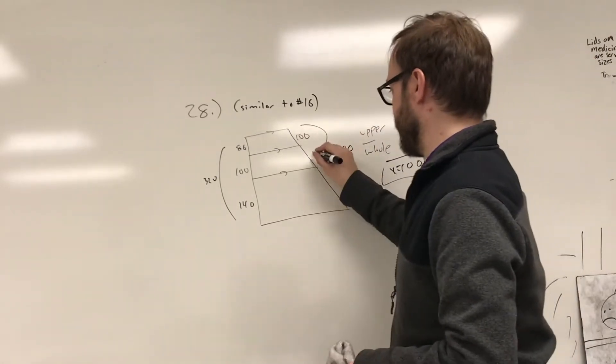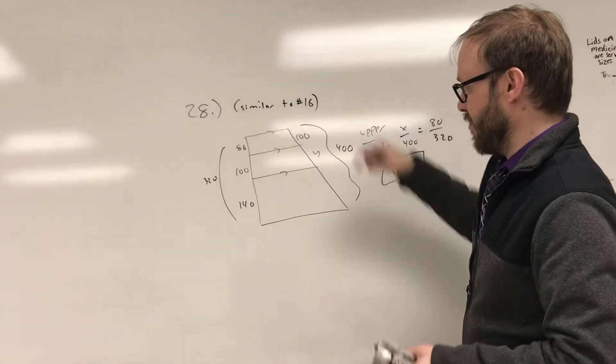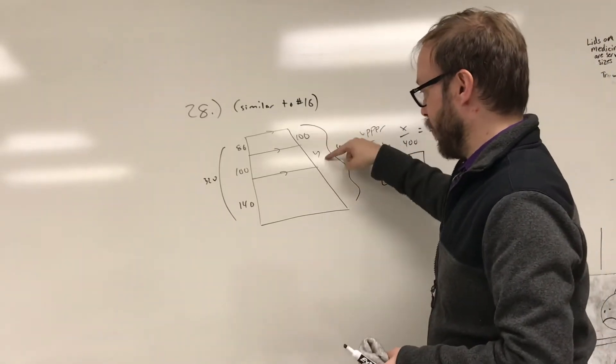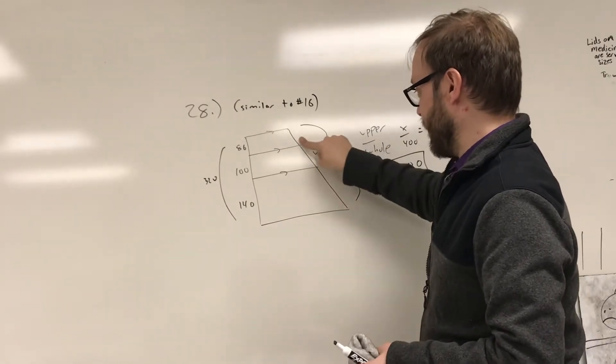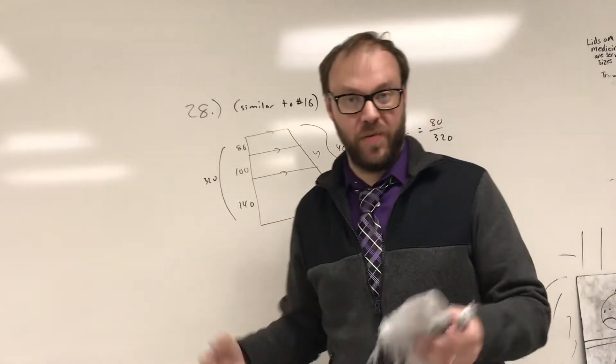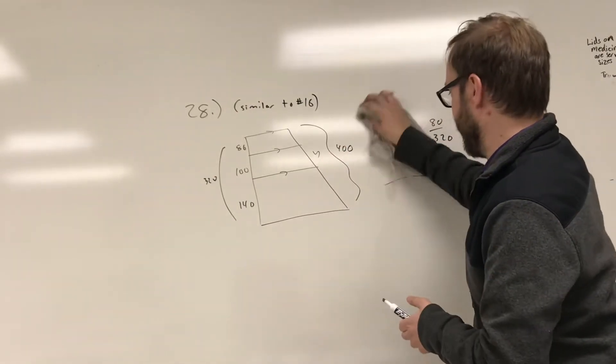If I want to find this length, make that y, same kind of thing. And you can leave that 100 in there. Like now you can do 100 over y is equal to 80 over 100. Or if you just want to ignore the fact that you have the 100, maybe you're not sure if you were right or not, now you've got the middle part and the whole.